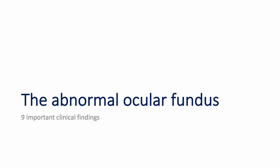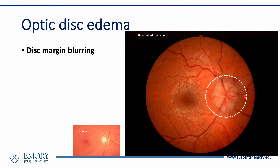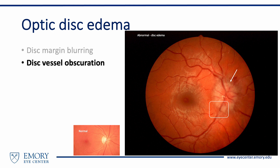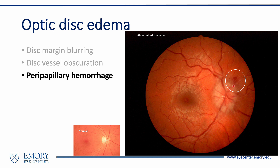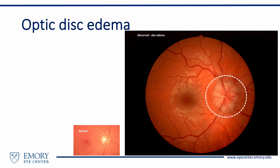In the next section, we will review the abnormalities that can be observed on ocular fundus photographs. The swollen optic nerve: compared to the normal optic nerve head, the swollen optic nerve demonstrates blurred disc margin, disc vessel obscuration, peripapillary hemorrhage, retinal folds, and loss of the optic cup. Optic disc edema is a neuro-ophthalmic emergency and must not be missed on fundus photographs.